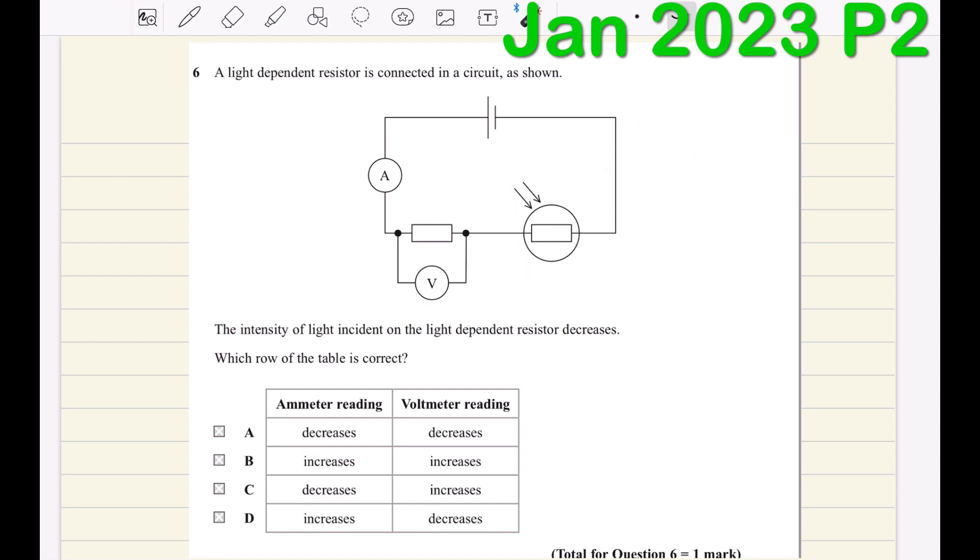The intensity of light incident on the light-dependent resistor decreases. This means the resistance of the light-dependent resistor increases.